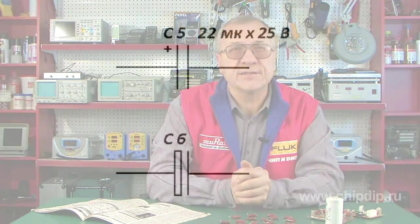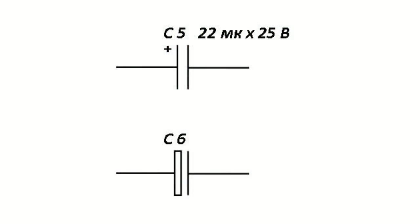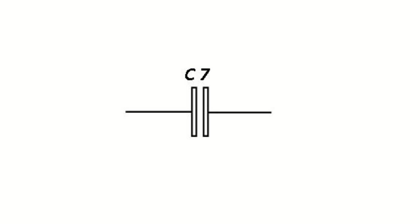By being polar, most electrolytic capacitors require observing the polarity when switching them on. On the diagrams the positive plate of this type of capacitor is marked by the plus sign or depicted in the form of a narrow rectangle.